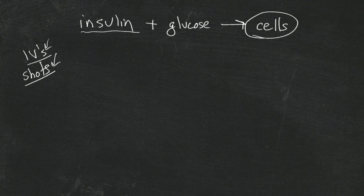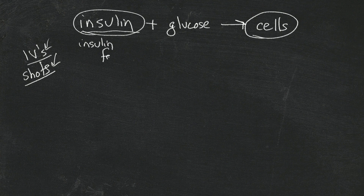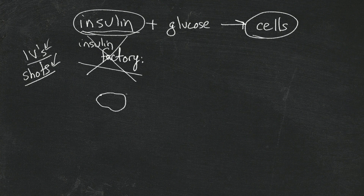The needles aren't that big, but they can be scary at first — that's how we get the insulin on board. Now, if what just broke down was an insulin factory, it would not be very hard to manage diabetes. But that's not what's broken down. What's broken down is a very complex system. Those beta cells are way more sophisticated than you would think.